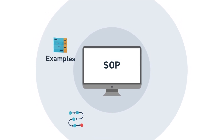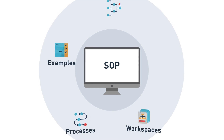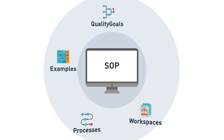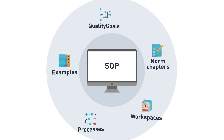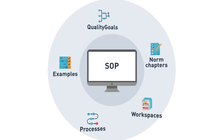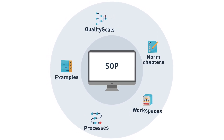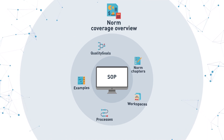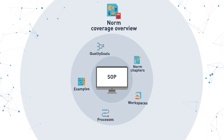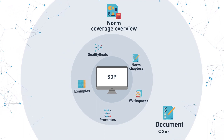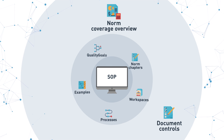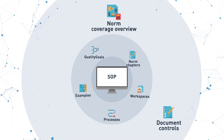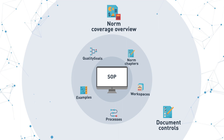Most importantly, a bunch of examples, processes, workspaces, and even the quality goals that you need anyway. Same as norm chapters, fully written so you can cross-reference your processes. And a norm coverage overview so you can see how many you have described already.